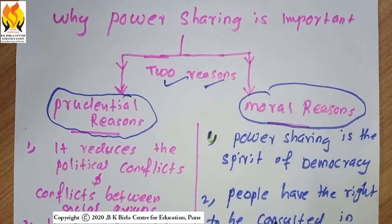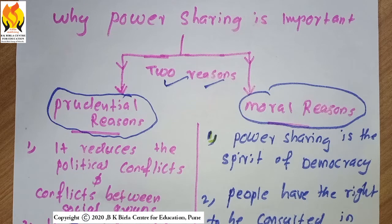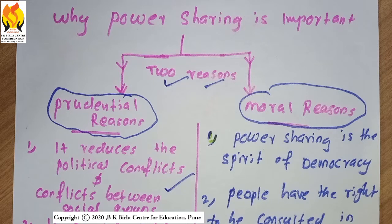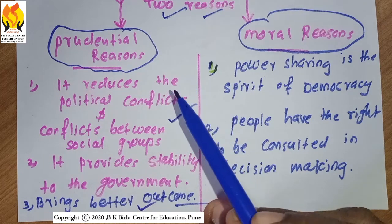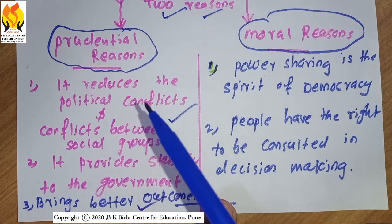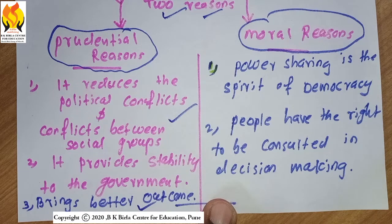When power is shared, it reduces political conflicts and conflicts between social groups. Second, it provides stability to the government — that means the government will be very strong and there will be no major issues. Third, it brings a better outcome. From these three points, we can assume that when powers are shared and bring a better outcome, we call these prudential reasons.